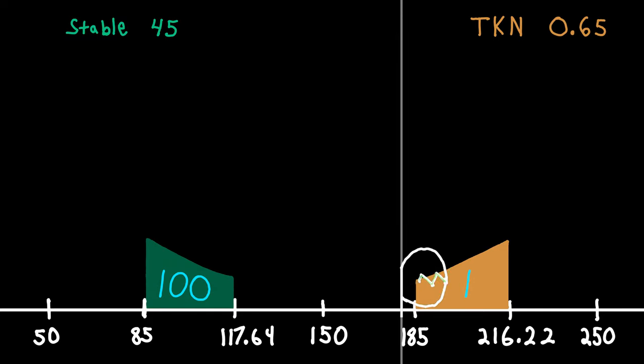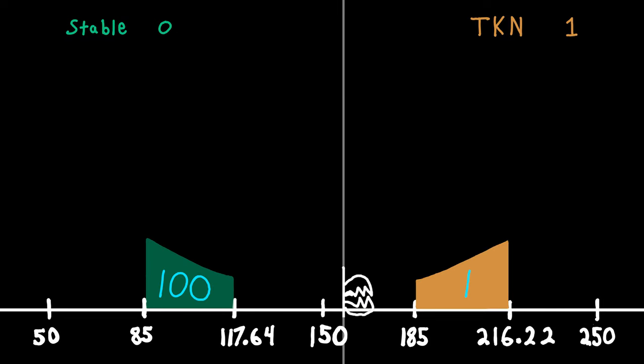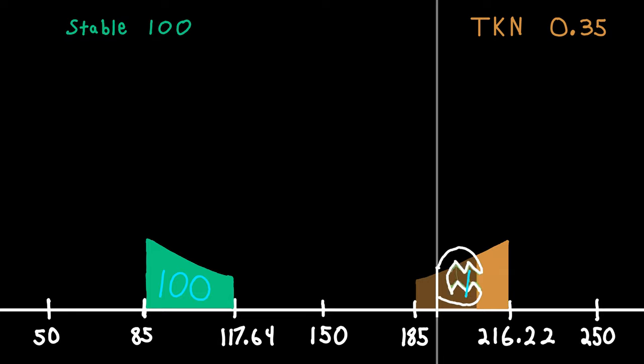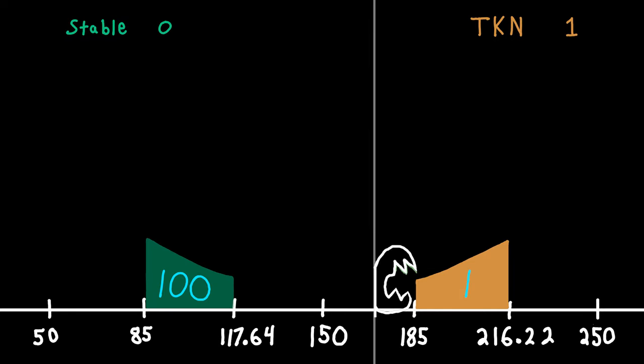At the exact moment when enough TKN has been sold for 100 stable, the buy range will be completely refilled and is in the exact same configuration as when the strategy started.